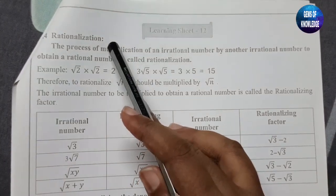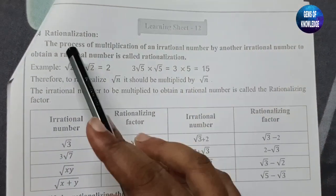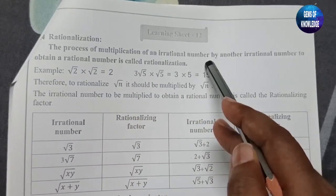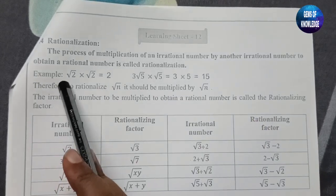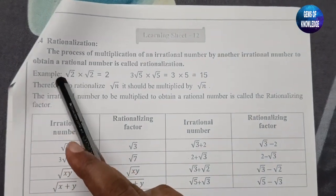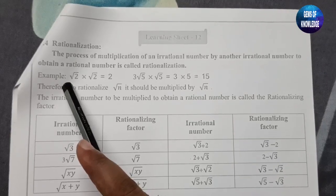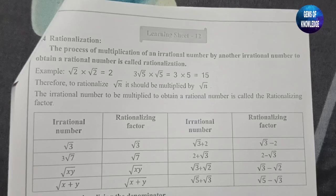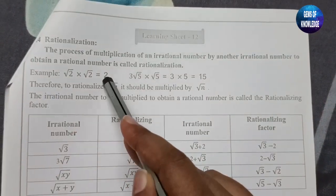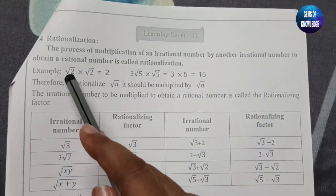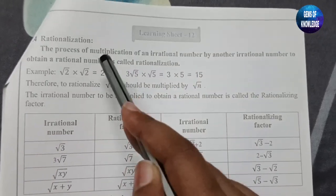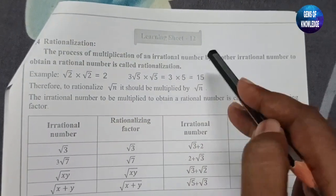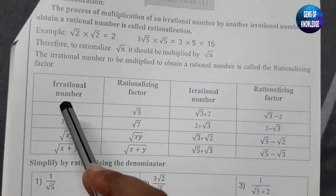Here we are going to study about rationalization. What is rationalization? It is the process of multiplying an irrational number by another irrational number to obtain a rational number. After multiplying two irrational numbers, when we get a rational number, that process is called rationalization.